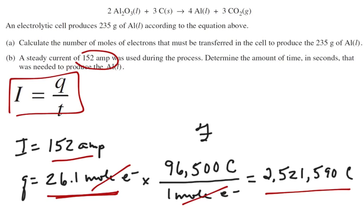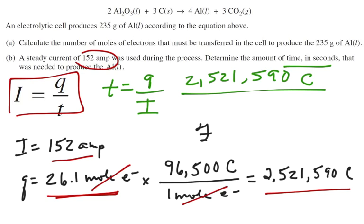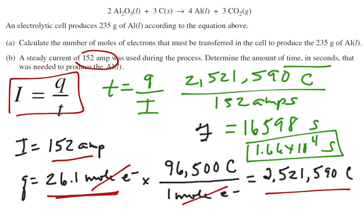So to finish this problem, we want the time in seconds, so instead of I equals q over t, let's change that to t equals q over I. q we know is 2,521,590 coulombs, divided by the amps, which is 152 amps. And that's going to come out to be 16,598 seconds. Now we're really only working to three significant figures, so we could make that 1.66 times 10 to the fourth seconds. And that would be a much more reasonable answer. So that's how long it would take to make 235 grams of aluminum.